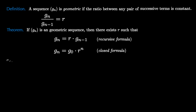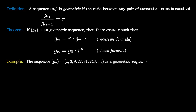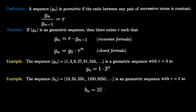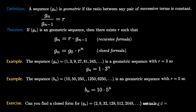Let's see some examples. The sequence g_n given by 1, 3, 9, 27, and so on is a geometric sequence with common ratio r equals 3 and first term 1, so g_n equals 1 times 3 to the n. The sequence b_n equals 10, 50, 250, and so on is a geometric sequence with r equals 5 and first term 10, so b_n equals 10 times 5 to the n. Can you find a closed formula for the sequence q_n given here, assuming that it's geometric?